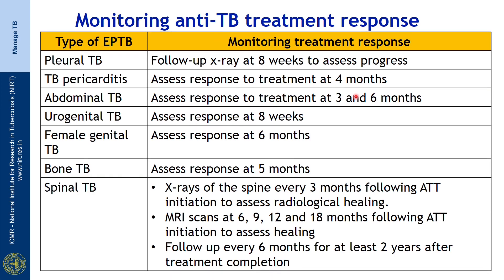For pleural TB, we follow up with a chest X-ray at 8 weeks after therapy to assess response. TB pericarditis is followed with echocardiography looking at whether the patient is developing constrictive pericarditis; the response is good within 4 months. Abdominal TB shows good response within 3 to 6 months. Urogenital TB responds within 8 weeks, and female genital TB is assessed after 6 months. Spinal TB is the most important and requires ongoing assessment.